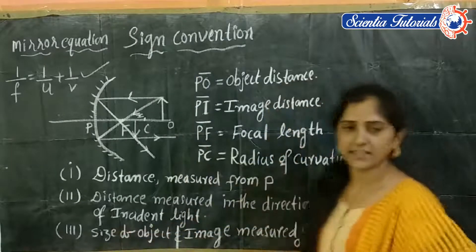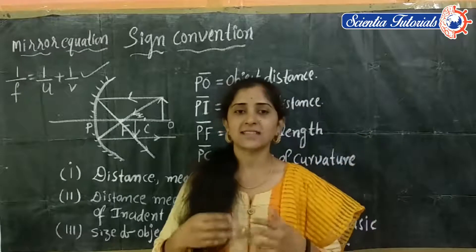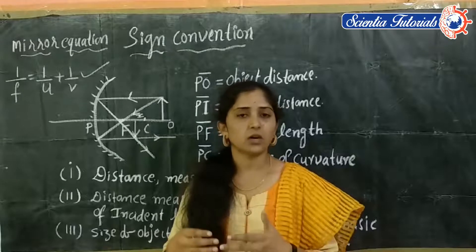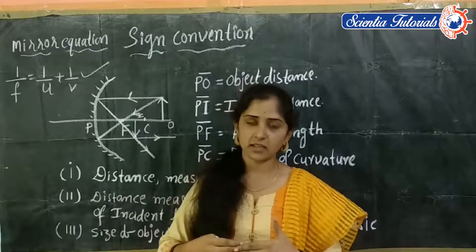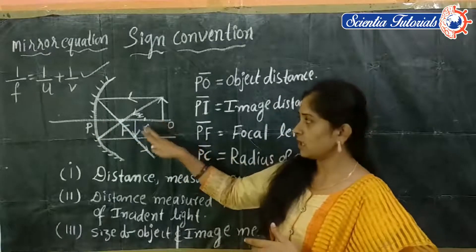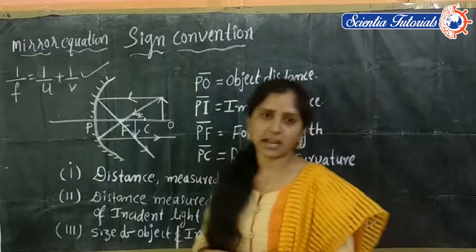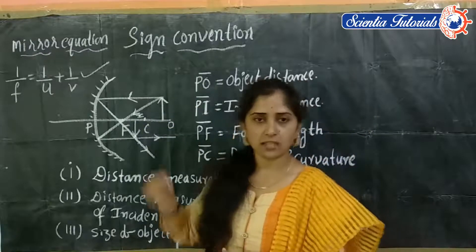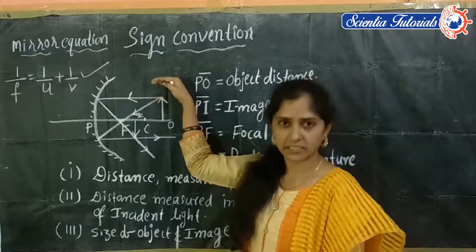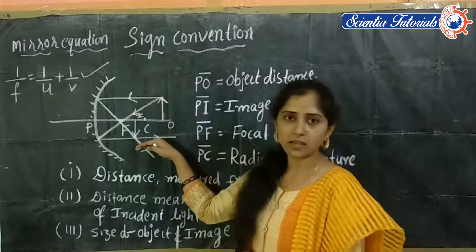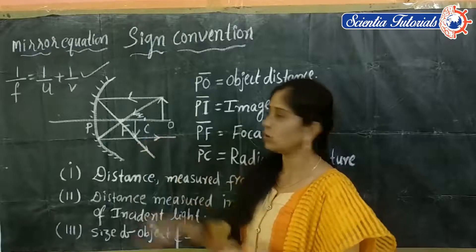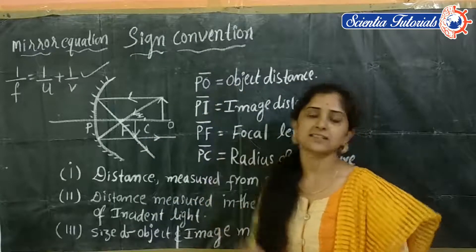The third rule gives information about the size of the object and the size of the image. Object height and image height are considered on the basis of the principal axis. Heights measured upward from the principal axis are taken as positive, and heights measured downward from the principal axis are taken as negative. These are the three rules under the sign convention.